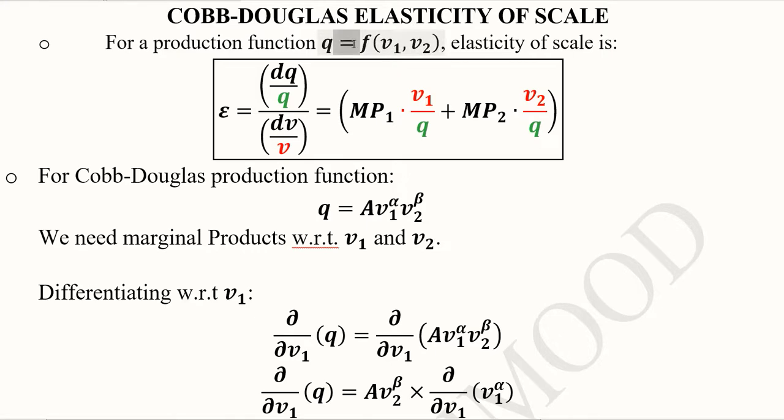If we consider that this is a production function in its functional form, the elasticity of scale can be found by taking the ratio of the proportional change in the output due to the proportional change in the inputs. In other way, the formula can be this.